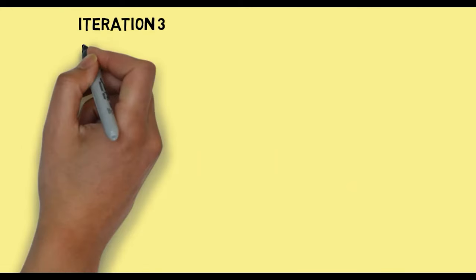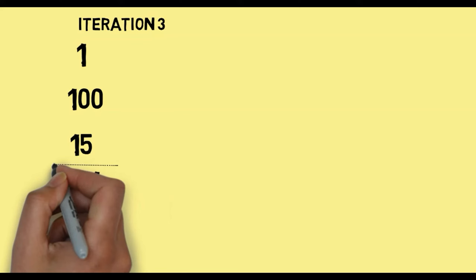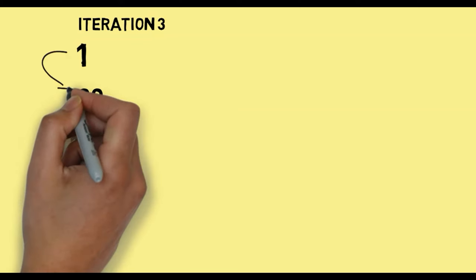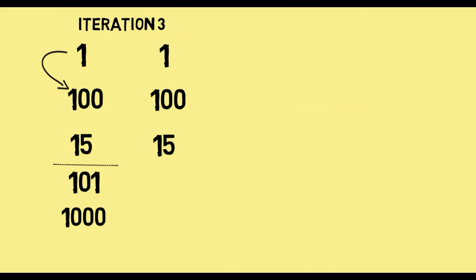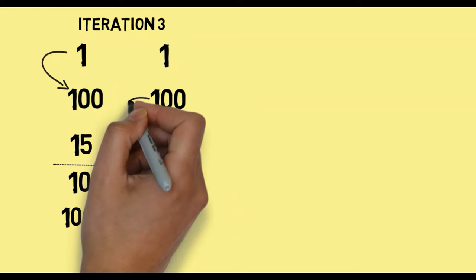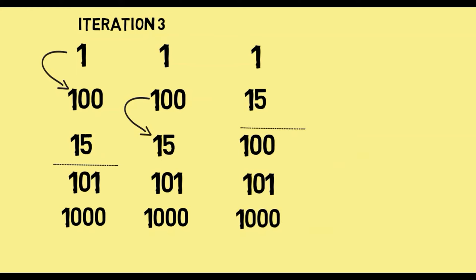We will start with the list as it was at the end of iteration 2. We compare 1 to 100 — 1 is smaller than 100, so 1 remains at its place. Next, we compare 100 to 15, and we find that 100 is greater than 15. So 15 moves up and 100 moves down. As you know, 101 and 1000 are already sorted, so our comparisons stop at 15. Since it's iteration number 3, we get 3 numbers in the correct sorted position at the end. Our sorted sublist now consists of 100, 101, and 1000, which are now in their correct positions.